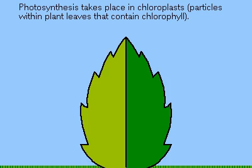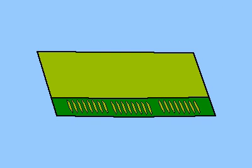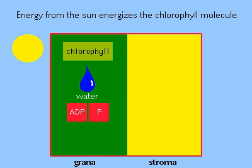The entire process takes place in tiny chloroplasts that exist in each plant leaf. Each chloroplast contains chlorophyll and membrane structures called stroma and grana that work according to the two phases of photosynthesis: light absorption and carbon fixation.